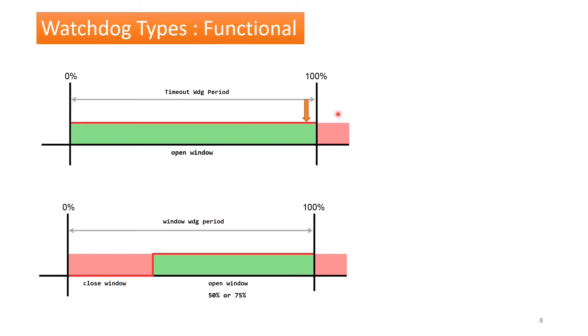The second mode is window mode. The window is divided into two parts: close window and open window. In close window time, watchdog trigger is not supposed to take place. Triggering the watchdog will generate a reset to the microcontroller in the close window time. So ideally the trigger should be done in open window time. Open window timing can be configured typically at 50% or 75%. So if we have window timing of 100ms and the window is set to 75%, the allowed trigger time in the open window is between 75 to 100ms.